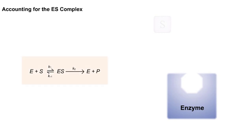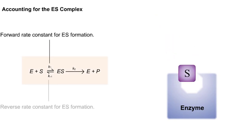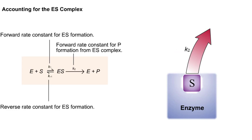The rate constants K1 and K-1 are the forward and reverse rate constants for the formation of the ES complex, and K2 is the rate at which the ES complex converts the bound substrate into product.